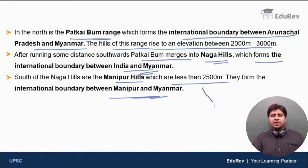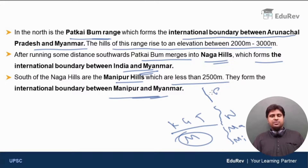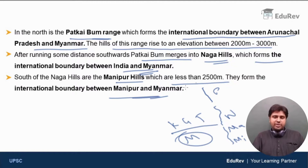Recapping: in the north you have the Patkai Bum Range, which merges into the Naga Hills. The continuation of the Naga Hills is the Manipur Hills and Mizoram Hills. To the west are the hills of Khasi, Garo, and Jaintia in Meghalaya. The Patkai Bum Hills form the boundary between Arunachal Pradesh and Myanmar; the Naga Hills between Nagaland and Myanmar; the Manipur Hills between Manipur and Myanmar; and the Mizoram Hills between Mizoram and Myanmar. All these hills together are the Eastern Hills or Purwanchal.